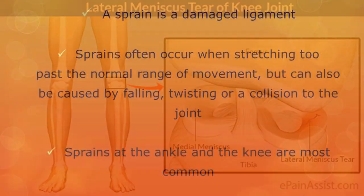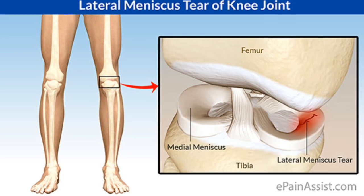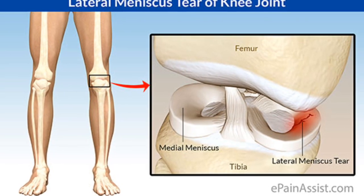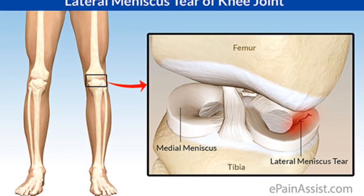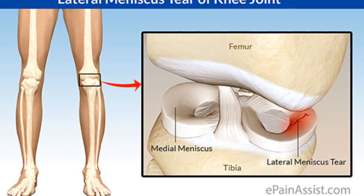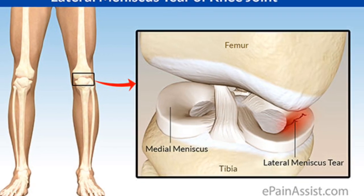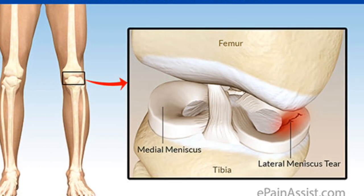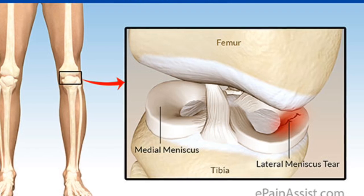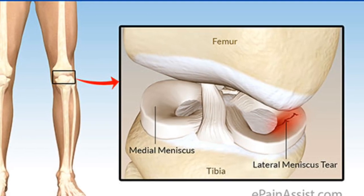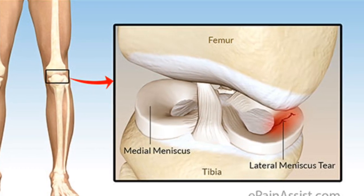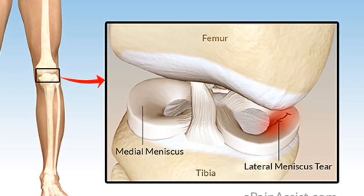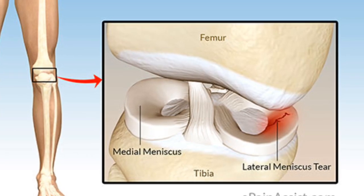The final injury you can get at a joint is a torn cartilage. As you can see, the cartilage sits on the end of the bone — this is a knee joint — and there is a lateral meniscus tear shown in the cartilage. It often occurs because of a twisted foot: if your foot gets stuck, one part of your knee goes one way while the other stays, and you tear your cartilage, which is very painful.